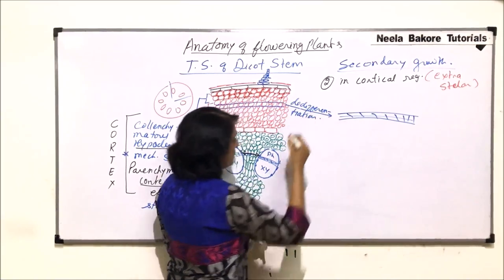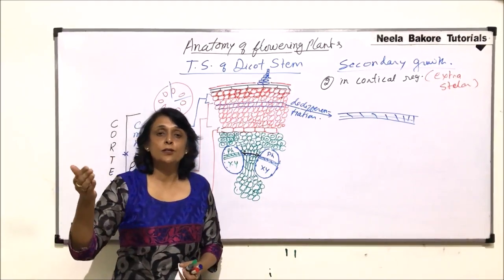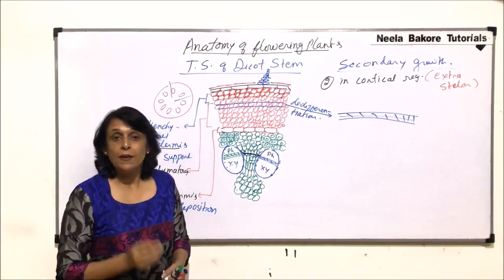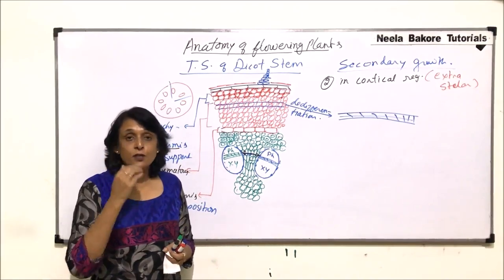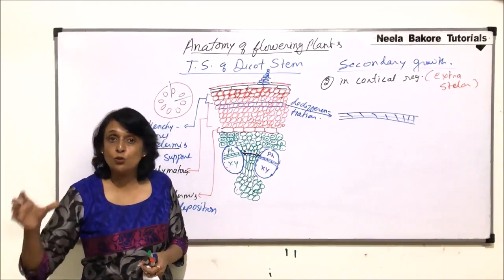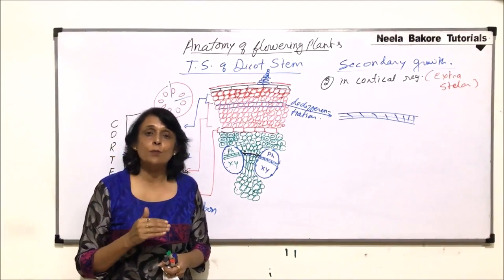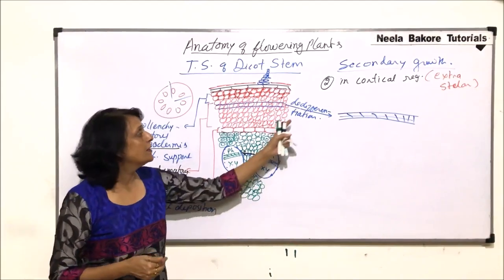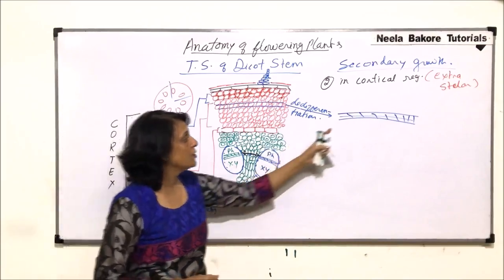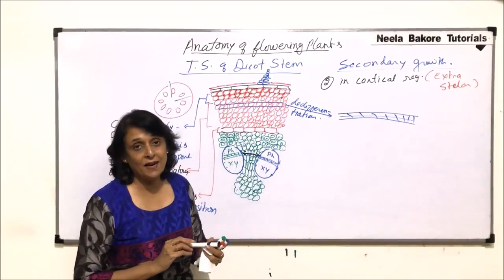De-differentiation basically means that a permanent tissue can come back into the division mode. After division, when it becomes permanent, we call it differentiation — it gets mature and specialized. If it comes back to that original property of division, the process is reversed; we call it de-differentiation. Now there is a strip of meristematic tissue formed.